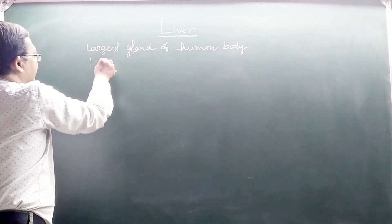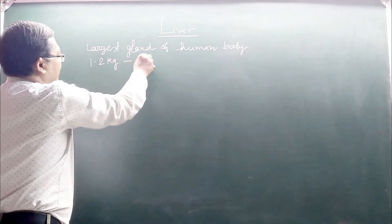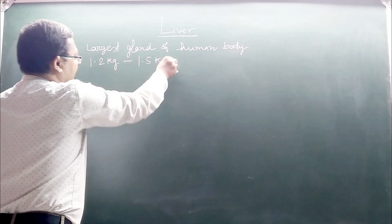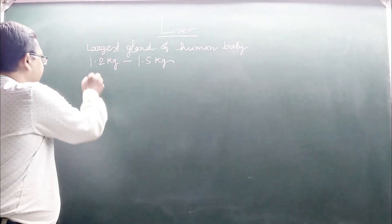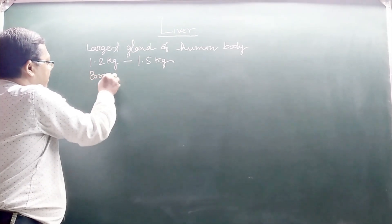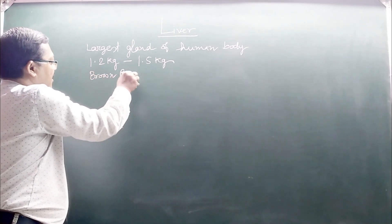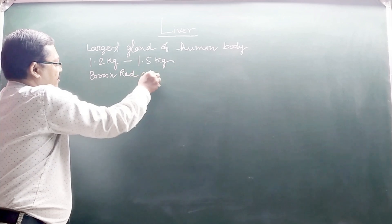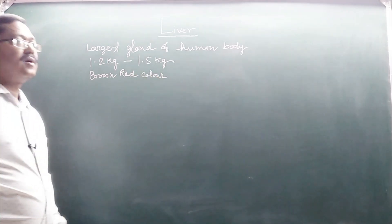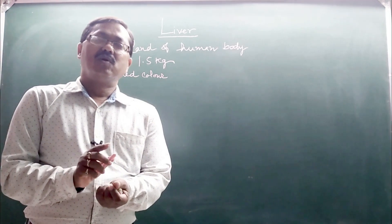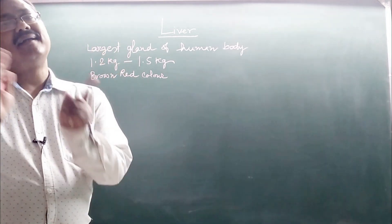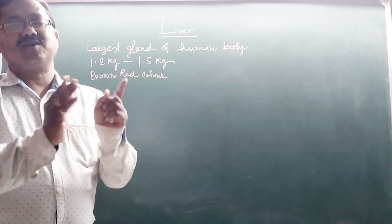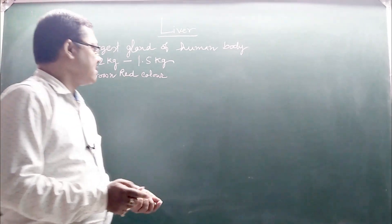Approximately its weight is 1.2 kg to 1.5 kg. Its color is brown-red. It has two lobes: the right lobe and the left lobe. The right lobe is larger.